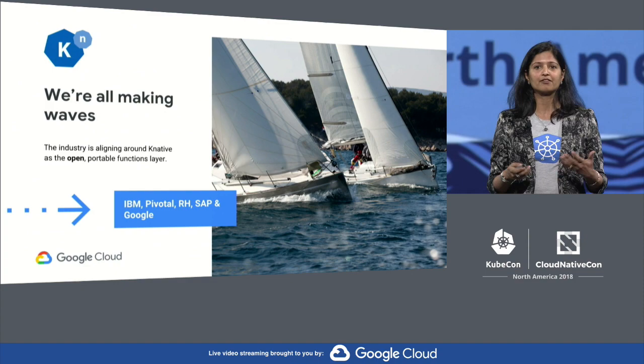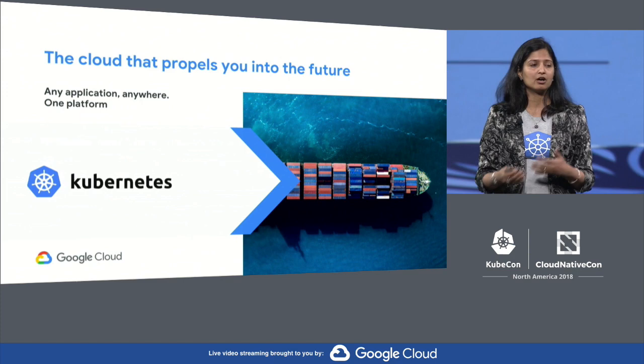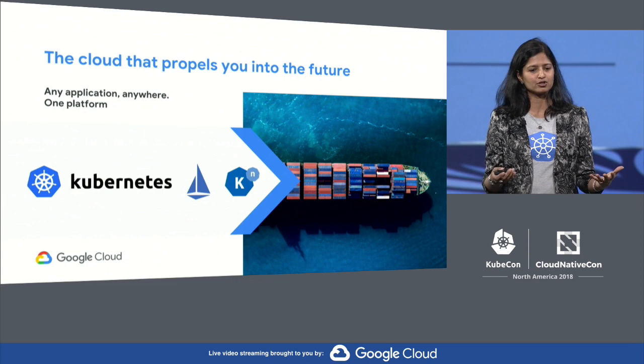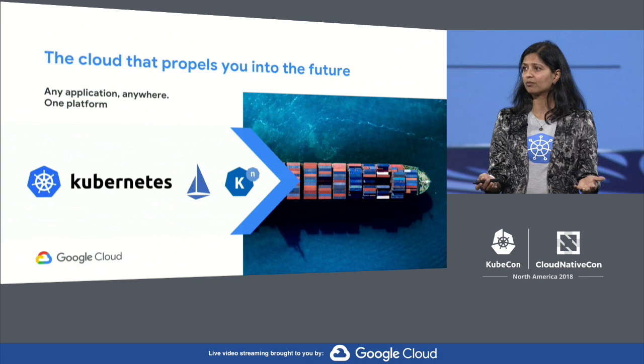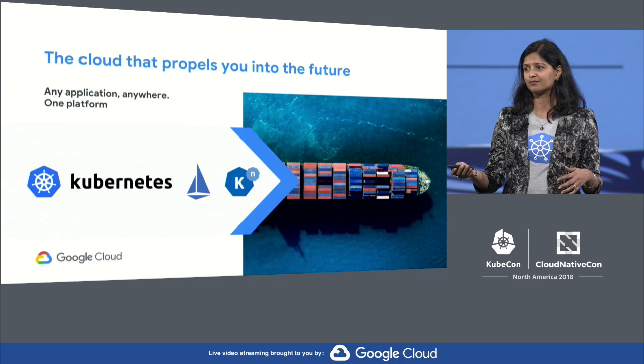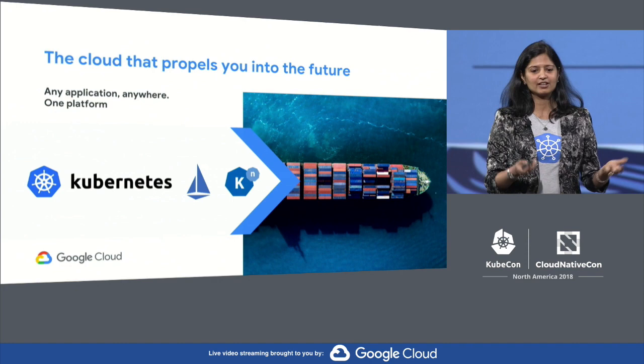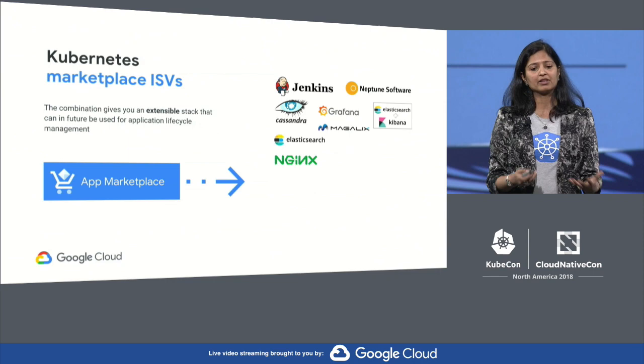This combination of Kubernetes, Istio, and Knative really provides a cloud that propels you into the future. It can run functions, stateless applications, stateful applications and databases — any modern application. And it's fully open source and portable, so you can run it on your laptop, in your cloud, in your data center, or at the edge. One platform, no friction. I encourage you to try it out on GitHub or on GKE, and to learn more you can subscribe to our podcast. Thank you.